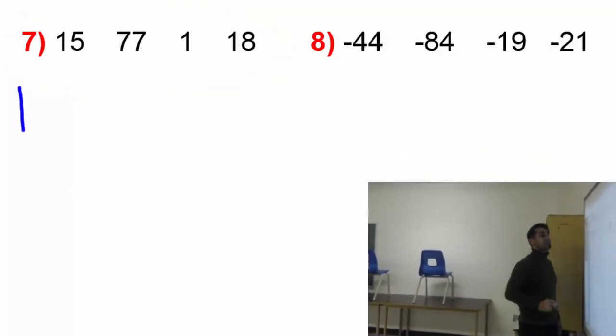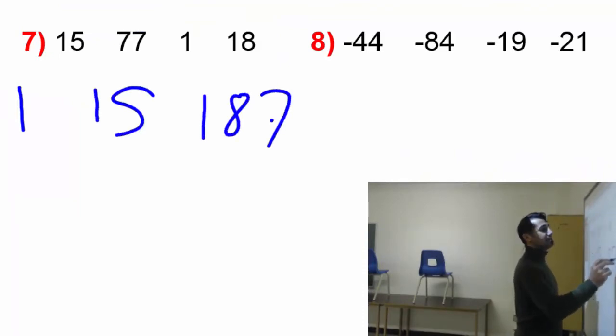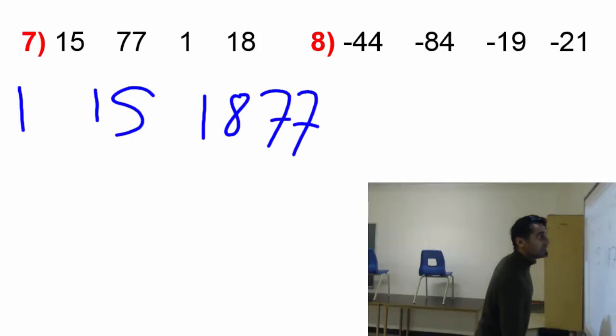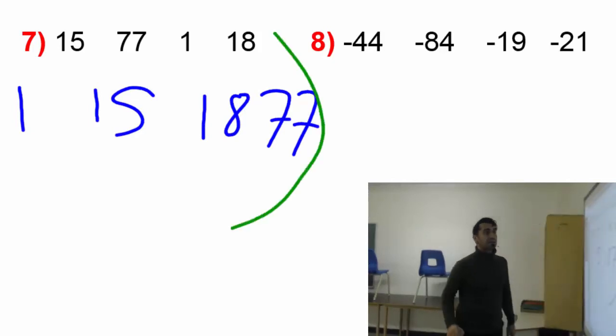The lowest is 1, and then 15, then comes 18, then 77.